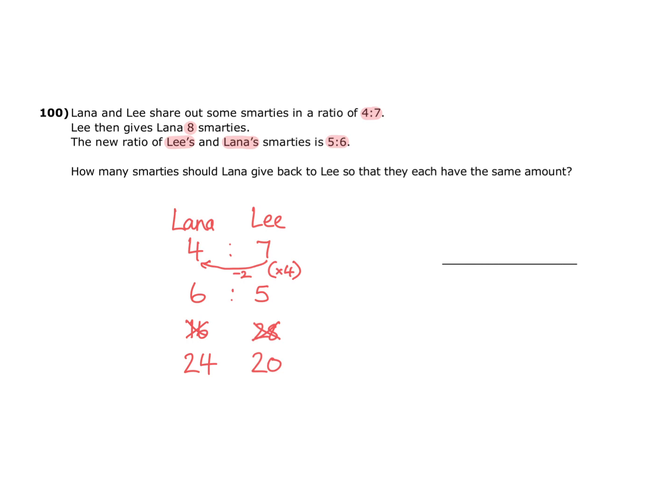So we now have 24 to 20 Smarties. And that means to even things out, Lana would need to give Leigh 2 Smarties. This would leave her with 22 and of course Leigh's new total would also be 22. So Lana should give 2 Smarties back to Leigh so that they each have the same amount.